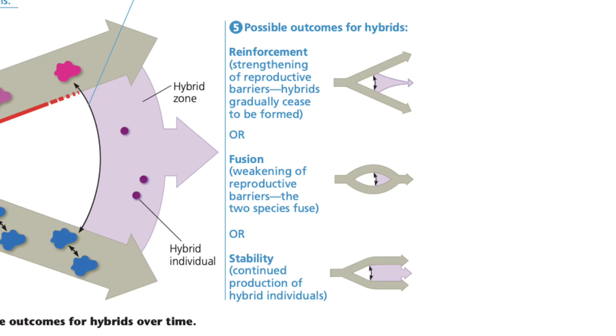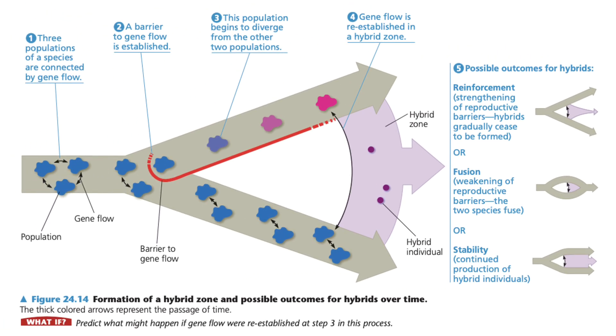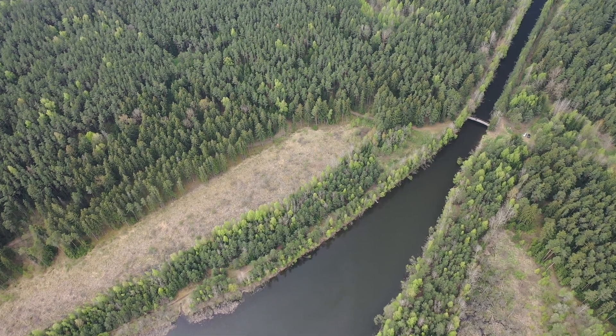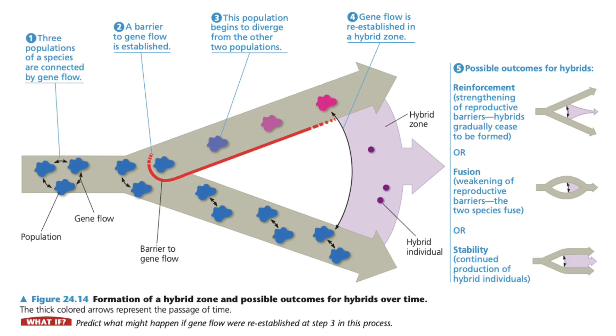Now let's take a look at two populations that are in fact the same species but just beginning their divergence — what are the potential outcomes? The book mentions three: reinforcement, fusion, and stability. Reinforcement will strengthen whatever reproductive barrier began the divergence process, thereby increasing the likelihood of speciation. In fusion, whatever was blocking interbreeding is lifted — for instance, a potential allopatric speciation event ended when a land bridge formed between the two isolated populations, reconnecting them. And lastly, stability involves continued production of hybrid individuals between the two populations without further divergence or convergence.